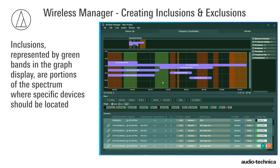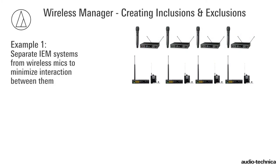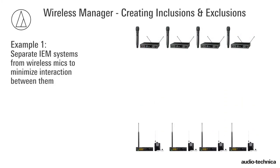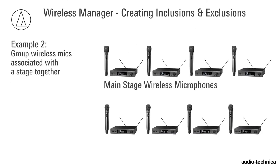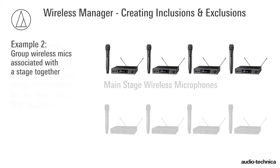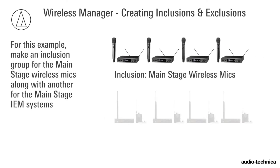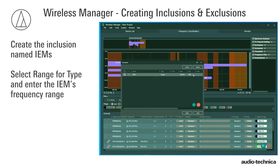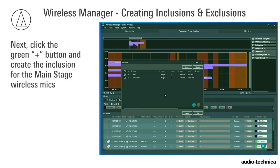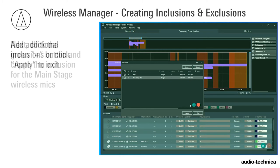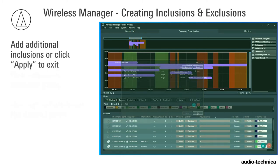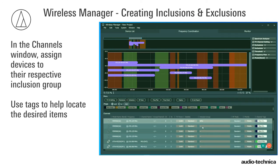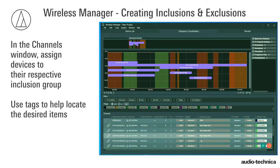Inclusions, represented by green bands in the graph display, are portions of the spectrum where specific devices should be located. One example is to separate IEM systems from wireless microphones, helping to minimize interaction between them. Another might be to group together wireless mics associated with the stage. For this example, make an inclusion group for the main stage wireless mics, along with another inclusion group for the IEMs. Create the inclusion named IEMs. Select Range for Type and enter the IEM's frequency range. Click the green plus button and create the inclusion for the main stage wireless mics. Add additional inclusions or click Apply to exit. In the Channels window, assign devices to their respective inclusion group. Selecting Tags can help locate the desired items.